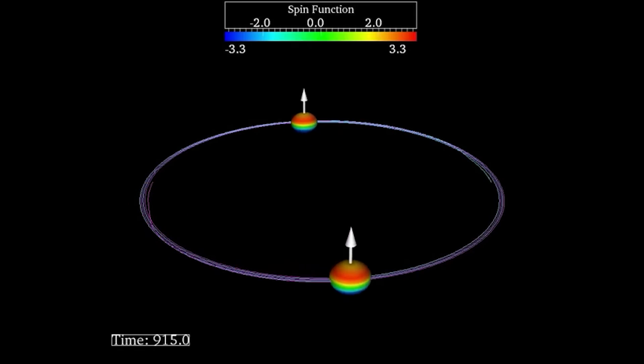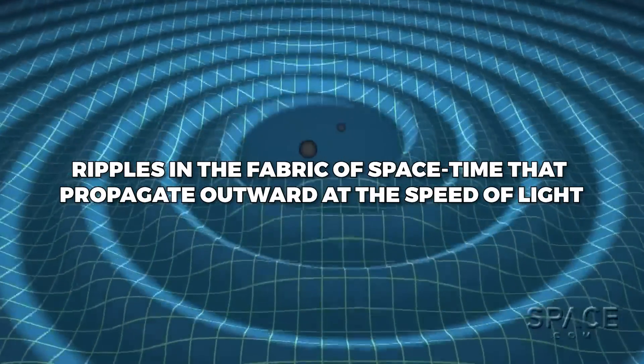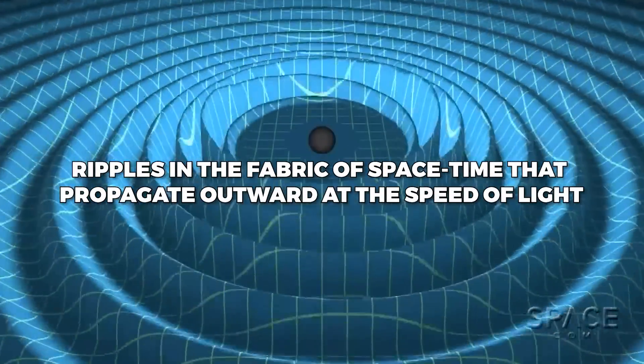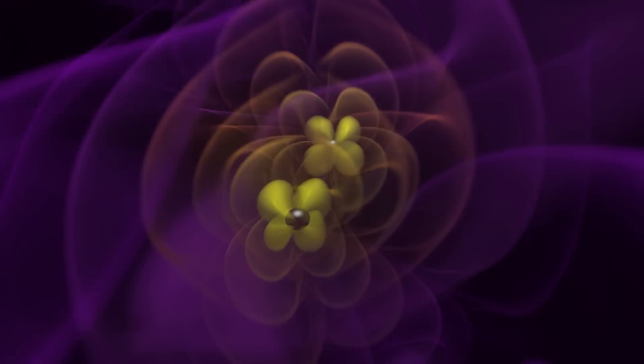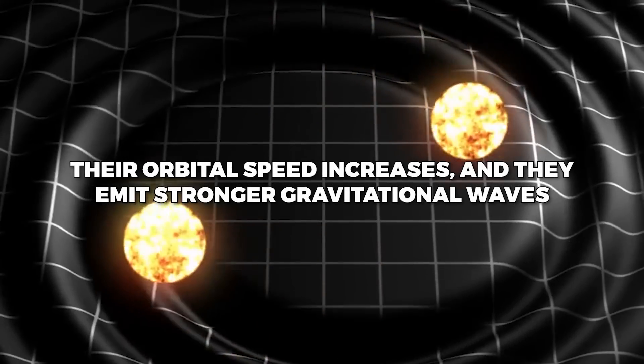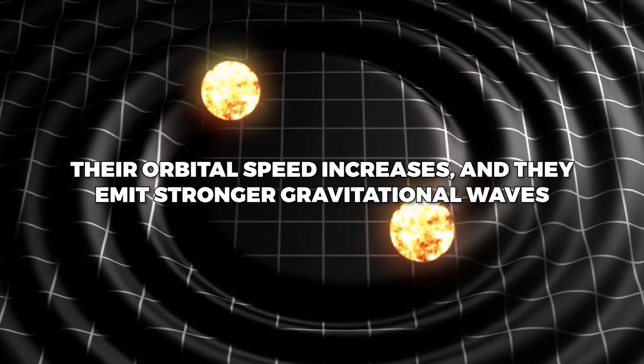When two massive objects such as black holes orbit around each other, they emit gravitational waves, ripples in the fabric of space-time that propagate outward at the speed of light. These waves carry energy away from the system, causing the two objects to gradually spiral closer and closer together. As they get closer, their orbital speed increases, and they emit stronger gravitational waves.